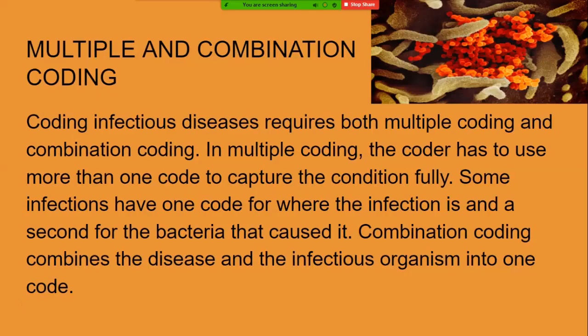You're going to be using two different kinds of codes in this particular section — it can either be multiple or combination coding. In multiple coding, the coder has to use more than one code to capture the condition fully. Some infections have one code for where the infection is and a second for the bacteria that caused it. Combination coding combines the disease and the infectious organism into one code.